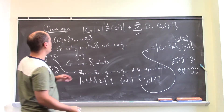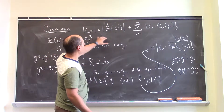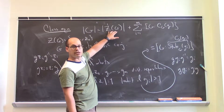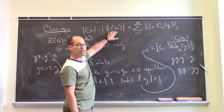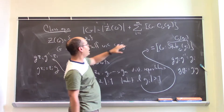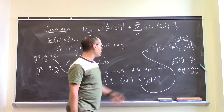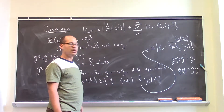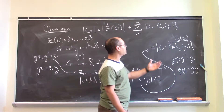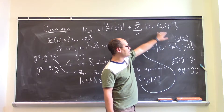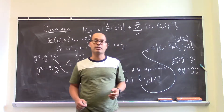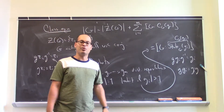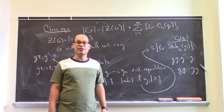Putting this together, you exactly get the class equation. What are all the things in the group? They're either the things in the single orbits — so you get all the Zs — and you get the orbits of the various Gᵢs, whose size is exactly the index of the centralizer. And that's the class equation. Now let's see some of the remarkable things you can do with it.